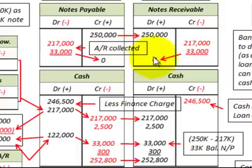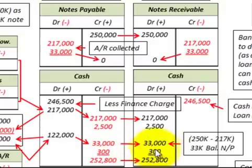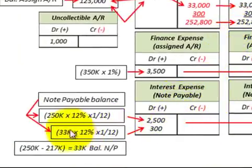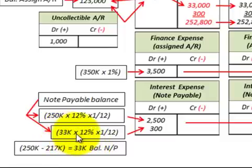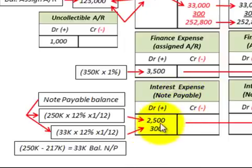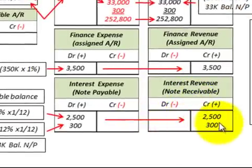There is also a second month interest expense of $300. The $250,000 note was reduced by the $217,000 first month payment, leaving a $33,000 balance. Taking $33,000 times 12% per year times one-twelfth of a year gives $300 of interest expense for Corporation A. Corporation A debits interest expense by $300 and Bank B credits interest revenue by $300. Corporation A reduces their cash by $300 and Bank B increases their cash by $300.